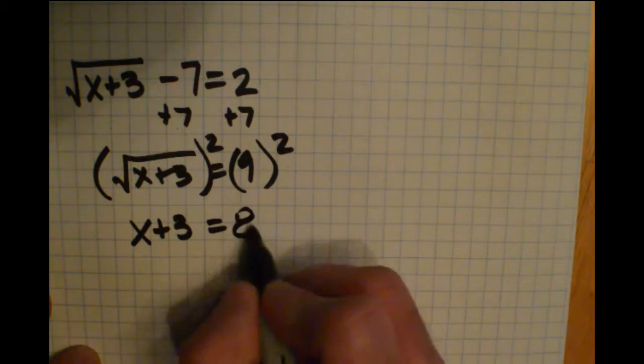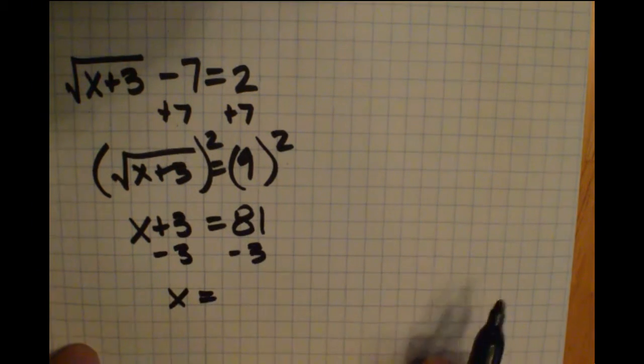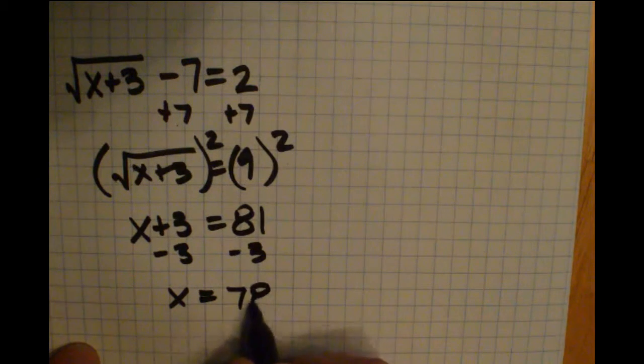Square the right side and I get 81. We'll subtract 3 from each side and x is going to equal 81 minus 3, which is 78.